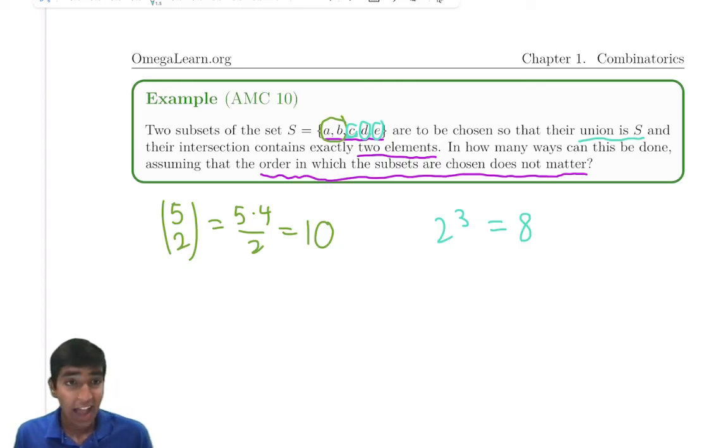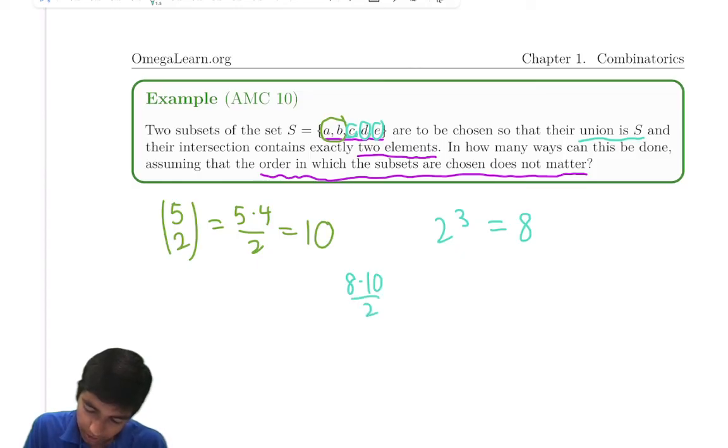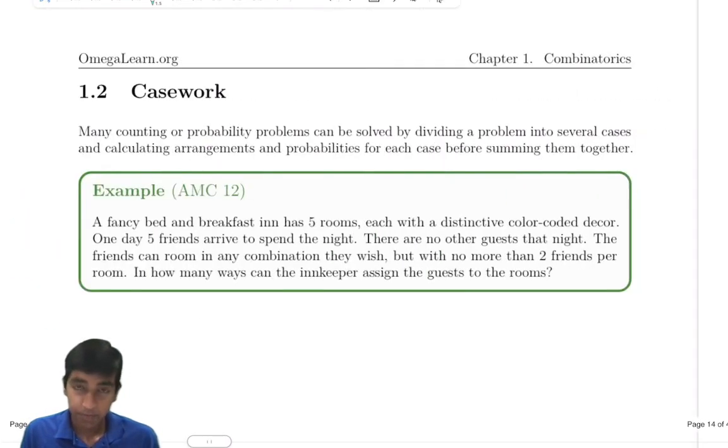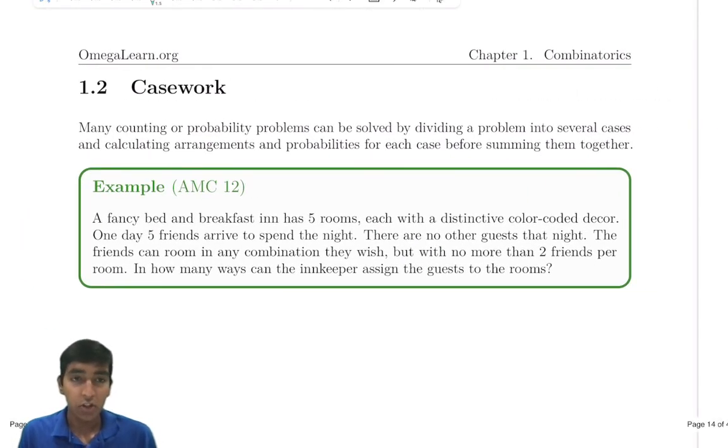Now, is there anything else we're missing? The last line, the order in which the subsets are chosen does not matter. So we divide by 2 for symmetry, because we can just flip the subsets. So, 8 times 10 divided by 2 equals 40. By the way, if you're interested in getting the material that I used in this video, be sure to subscribe to be notified when it's released. Now, we're going to move on to casework. Many counting and probability problems can be solved by dividing a problem into cases. And it's a very powerful tool on the AMCs. But, if you want to learn about that, you'll have to check out the next video.